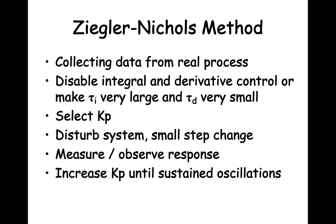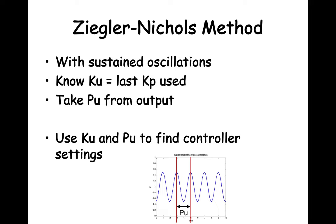You don't want oscillations that continue to get larger or blow up — you want sustained oscillations. Once you get the system to produce sustained oscillations, you know Ku. Ku is the last Kp value used. Then you look at the process response and determine the ultimate period of the sustained oscillation in the process output. Once you know Ku and Pu, you can find the controller settings.